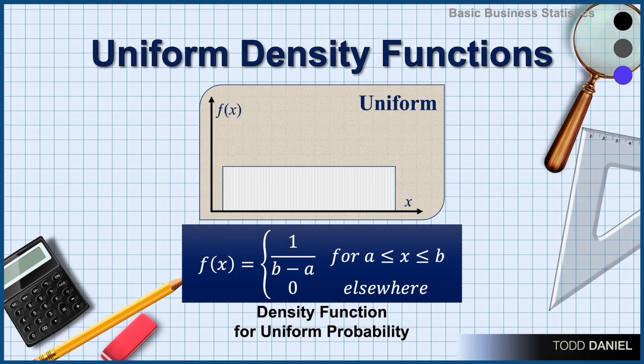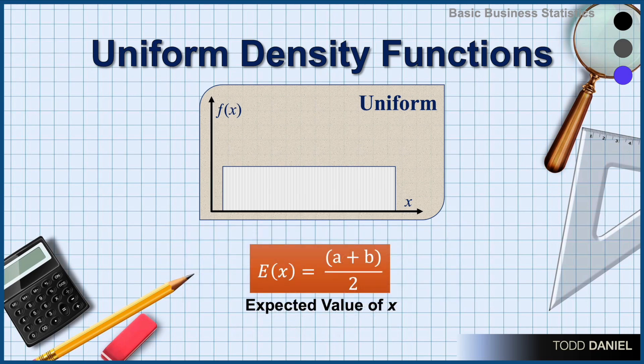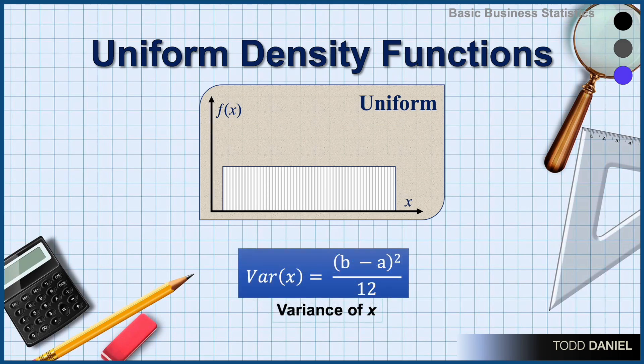Here is the density function for uniform probability. It's one over the maximum minus the minimum. Note that values exceeding the maximum or less than the minimum have a frequency or an expected value of zero. The formula for expected value is add the minimum and maximum, divide by two. And the variance, subtract the minimum from the maximum, square it, and divide by 12.